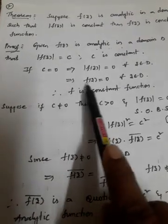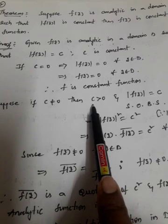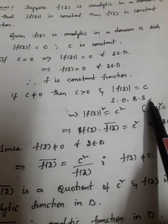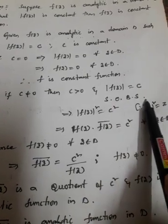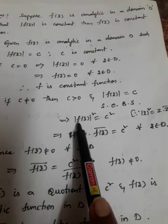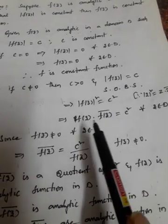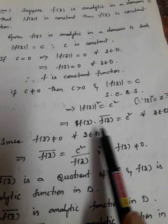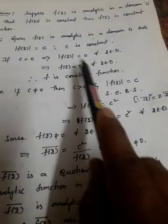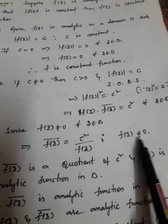Now suppose C is not equal to 0, so C > 0. Squaring both sides of |f(z)| = C gives |f(z)|² = C². Using the identity |z|² = z·z̄, we write |f(z)|² = f(z)·f(z̄) = C², for all z in D. Since f(z) ≠ 0, we can write f(z̄) = C² / f(z).